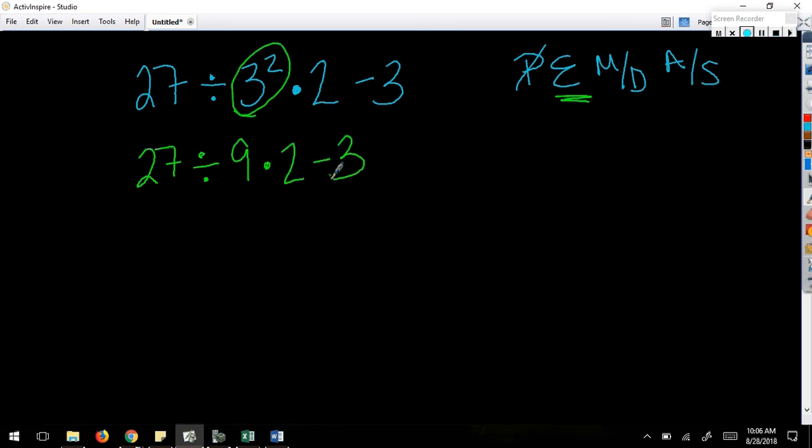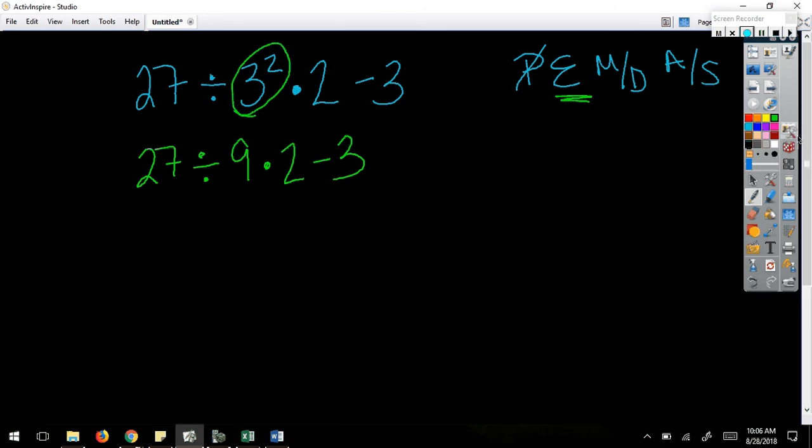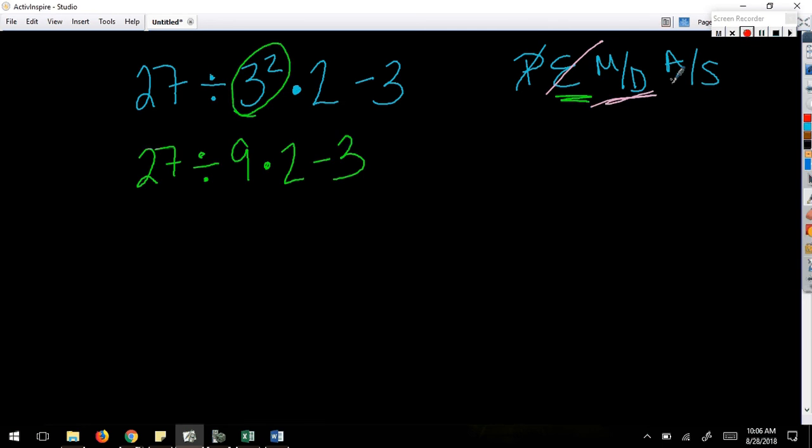I do have an exponent, so I want to evaluate that first. What is three to the second power? Nine. Now I know that you have a calculator that you can put this in, but I want to remember my examples model the amount of work that I want you to show on your homework. So I want to see these steps as you go. All right, any other exponents? And again, if there were more exponents, you still move left to right as you see them. All right, exponents done. How about multiplication division? Yes, do the division first because left to right it comes first, right? So what is 27 divided by 9? Three.